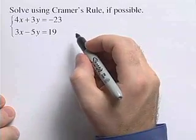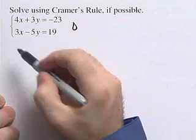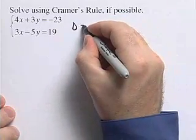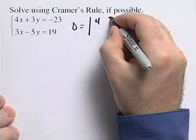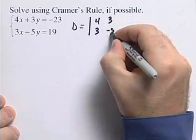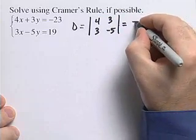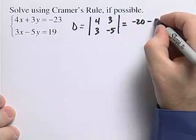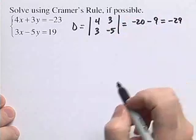To use Cramer's Rule, we need to find the determinant d for the coefficients on our variables. So d is going to be the determinant of 4, 3, 3, negative 5. That's going to be 4 times negative 5 is negative 20, minus 3 times 3, which is 9. So we get negative 29.